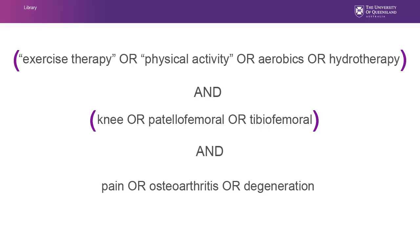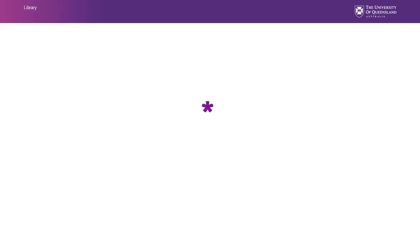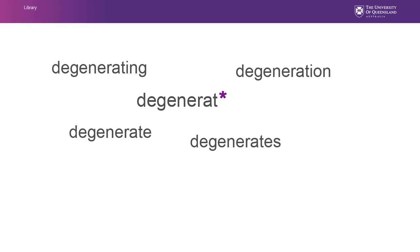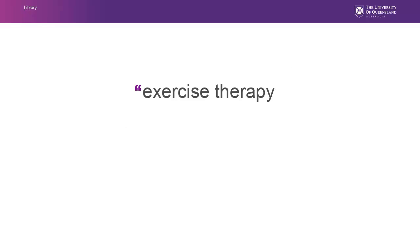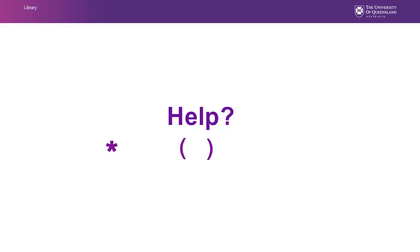Add an asterisk or truncation tool at the end of words to find plurals and alternative word endings. For example, 'degenerat*' will find degenerate, degenerates, degenerating, or degeneration. Quotation marks will force the database to search for your terms as a phrase and not as individual words. Check the help section in the database before you search to see how the platform handles truncation, brackets, and phrase searching. Modify your search if needed.